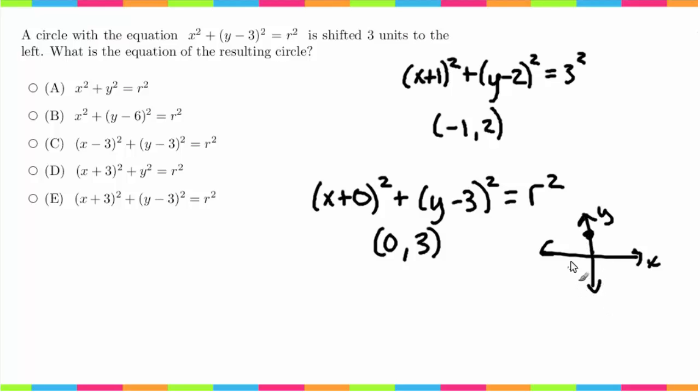So now, if we wanted to shift this center 3 units to the left, we're going to be changing this here, because this dictates the right or left shift. So, in order to shift it 3 units to the left, we would have to do x plus 3 squared plus y minus 3 squared equals r squared.